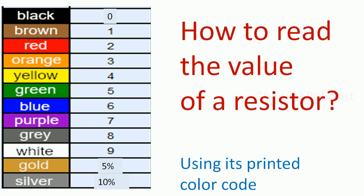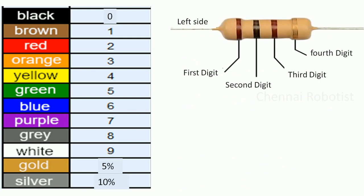Now here is the color code of the resistor — it looks very colorful! Instead of numbers printed on small resistors, we use a color code to identify the resistance value. To read them, you need to memorize the color code numbers: black is 0, brown is 1, red is 2, orange is 3, and so on up to white which is 9. Gold means 5% tolerance and silver means 10% tolerance.